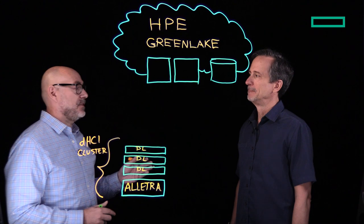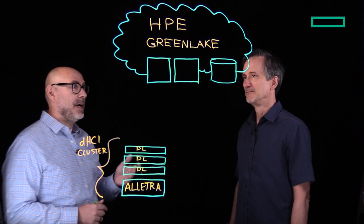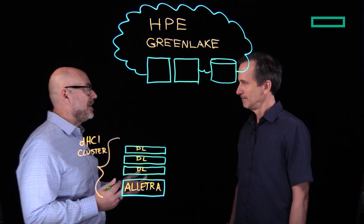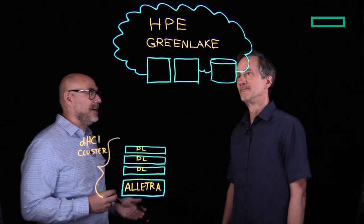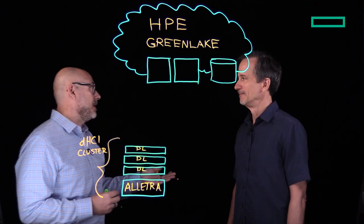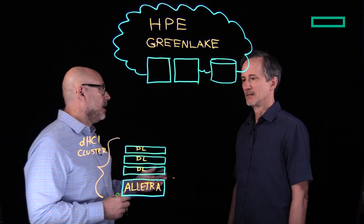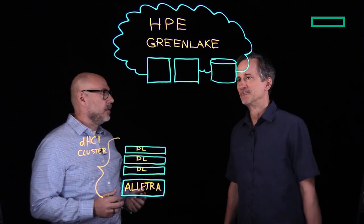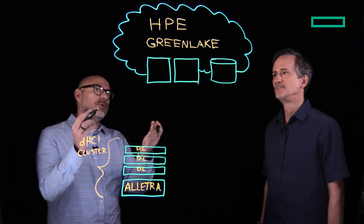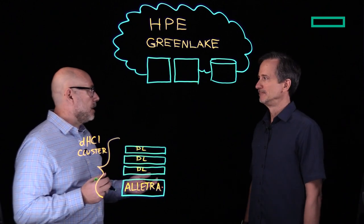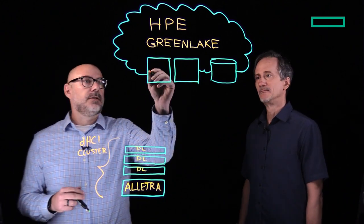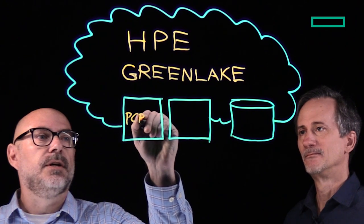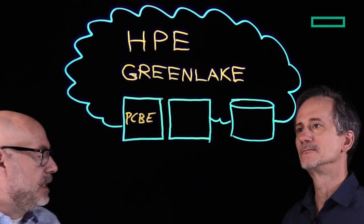It's actually interesting that you come by right now because I'm putting together a picture to describe a solution that would have been hugely beneficial to your friend — he wouldn't have ended up in that situation. I can describe that for you a little bit. So there are two main components to this solution. The first is something we call Private Cloud Business Edition, or PCBE for short.